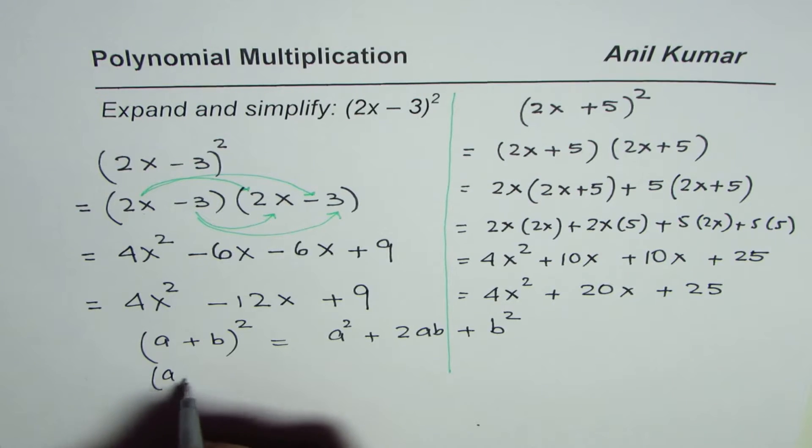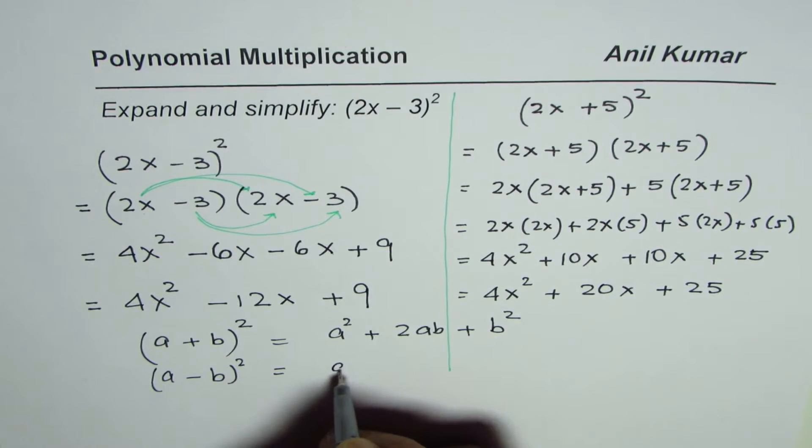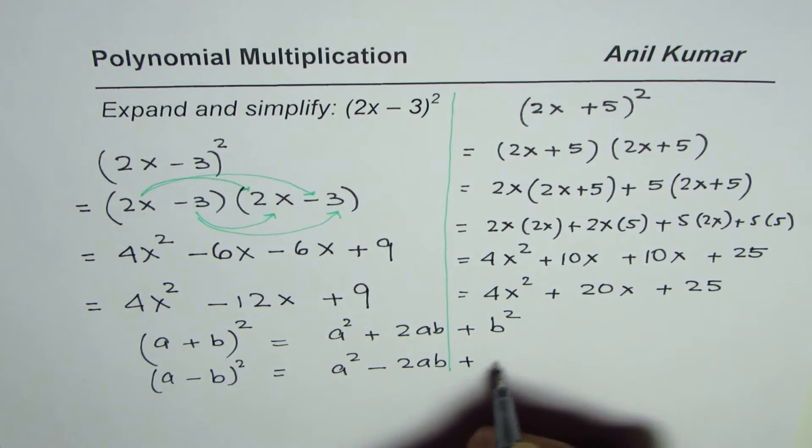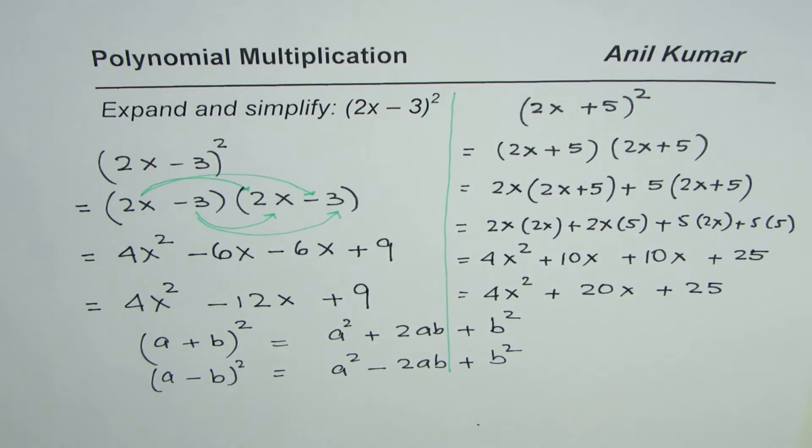Try (a - b)² also. You'll get a² - 2ab + b². So squaring binomial is kind of working like this.